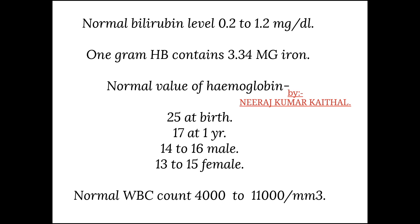1 gram of hemoglobin contains 3.34 mg iron. Normal values of hemoglobin: at birth 25 g/dL, at 1 year 17 g/dL, adult male 14 to 16 g/dL, adult female 13 to 15 g/dL. Normal WBC count is 4,000 to 11,000 per mm cubed.